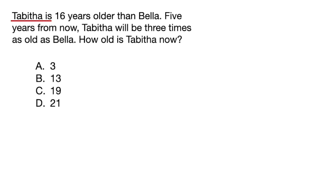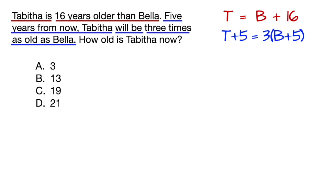So Tabitha is means T equals 16 years older than Bella, which means 16 plus B or B plus 16. And then the second sentence elicits a second equation. Five years from now, Tabitha, which means 5 plus T or T plus 5, will be means equals 3 times, meaning 3 times something, put a parenthesis, as old as Bella, so B plus 5.